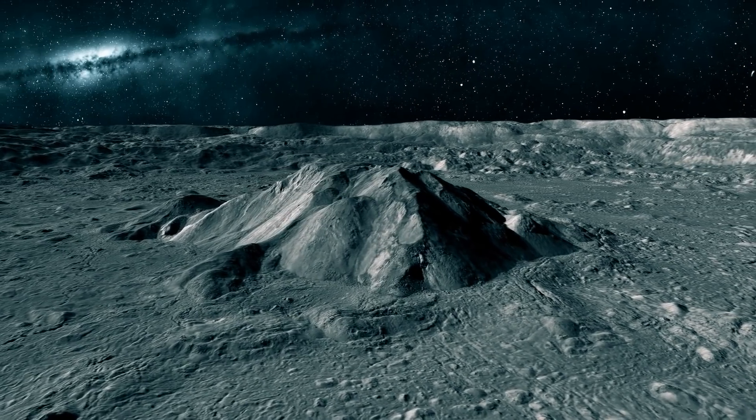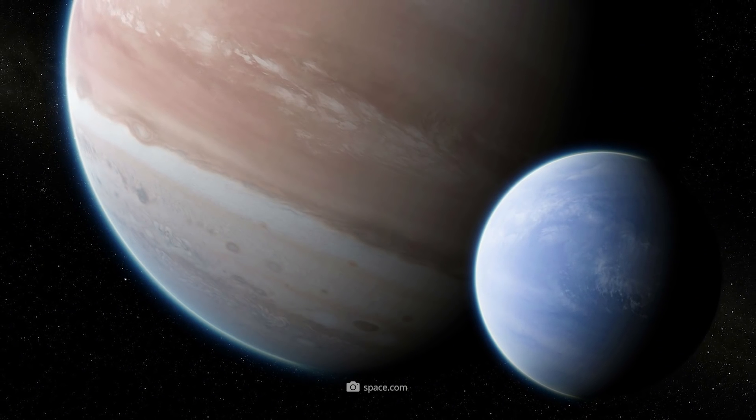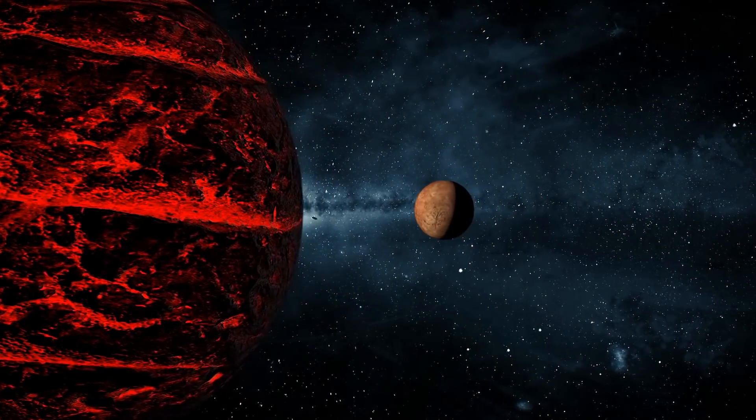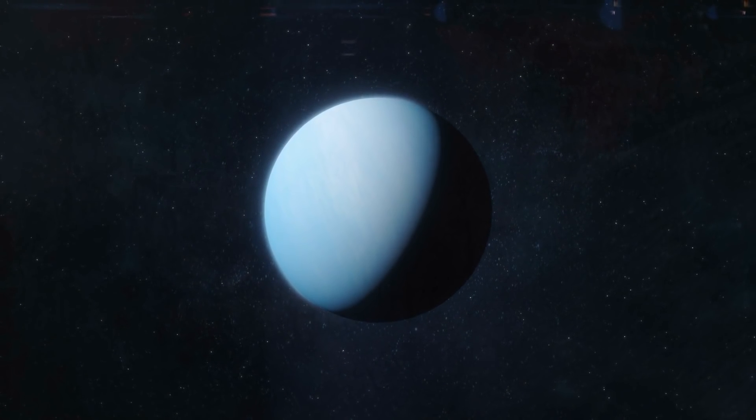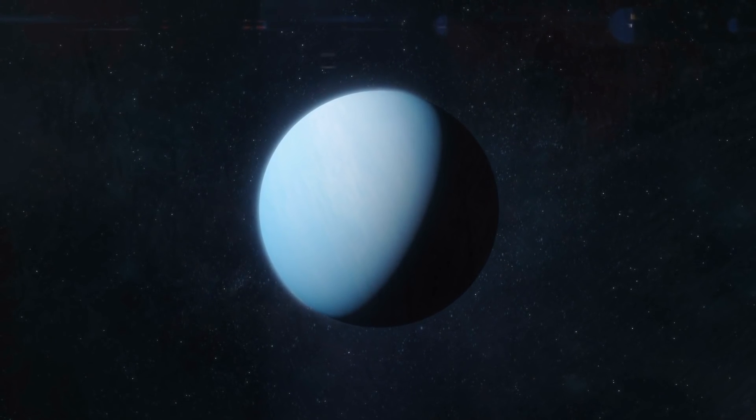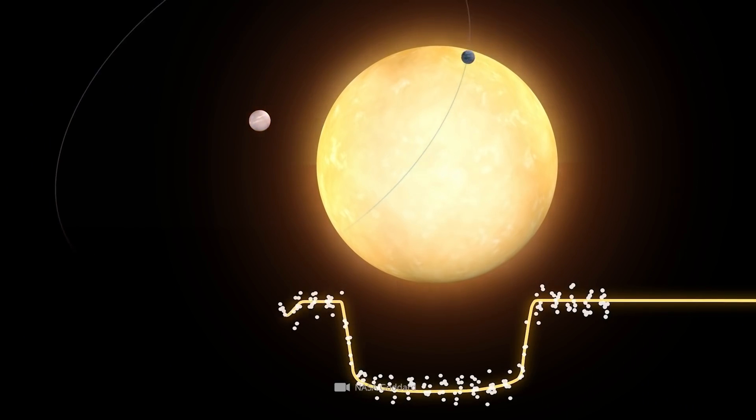Although the actual presence of the first discovered exomoon in history has not yet been 100% confirmed, experts believe it's most likely that the observed anomalies are due to the influence of a satellite. Accordingly, Kepler 1625b could have a satellite the size of Neptune, which orbits it on an orbit inclined at 45 degrees.